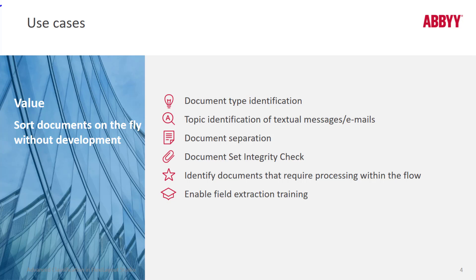You can also use classification to cherry pick documents that need attention in a flow of documents. Classification is used when we want to enable field extraction training for different document variants — we first train classifiers to distinguish between the different variants, and then perform field extraction training, creating a field extraction training batch for each variant.